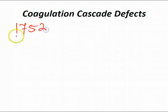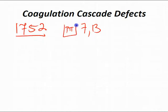Coagulation cascade defects — unlike primary hemostasis defects, secondary hemostasis defects cause large vessel bleeding, like large ecchymosis, large bruises, or hemarthrosis. An increased PT is caused by a deficiency of fibrinogen (factor 1), 2, 7, 5, or 10 — remember that as 1752. An increased PTT is caused by a deficiency of all factors except factors 7 and 13.